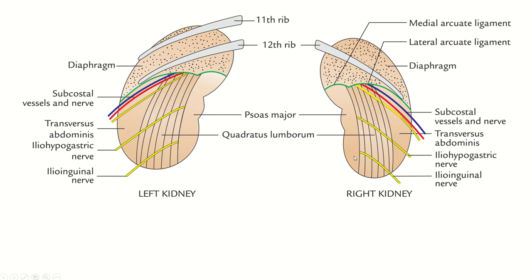The lower part is related with two posterior abdominal wall muscles and one anterior abdominal wall muscle. The posterior abdominal wall muscles from medial to lateral are psoas major and quadratus lumborum, and laterally one muscle of the anterior abdominal wall — transversus abdominis. Some fascia and nerves are also related here: the subcostal nerve, iliohypogastric nerve, and ilioinguinal nerve.